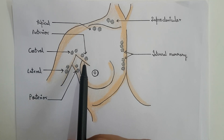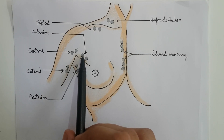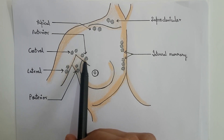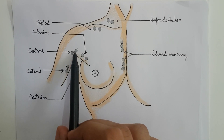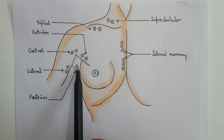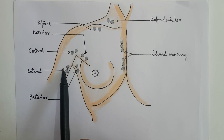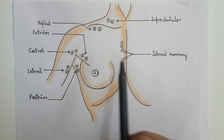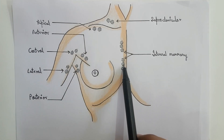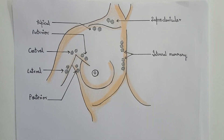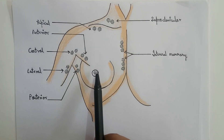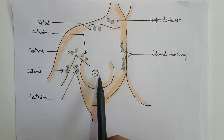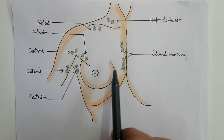As you can see, this right here is the anterior group of lymph nodes of the axillary lymph nodes. This right here is the central group, this is the posterior, lateral, and finally the apical group of lymph nodes. And these right here are the parasternal or the internal mammary lymph nodes of the anterior thoracic region. The lymph from the breast drains into these lymph nodes either directly or indirectly.